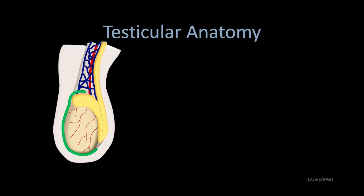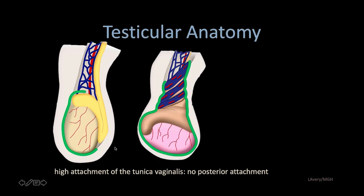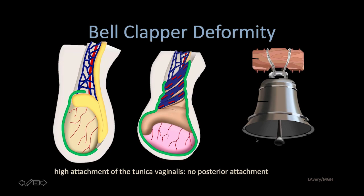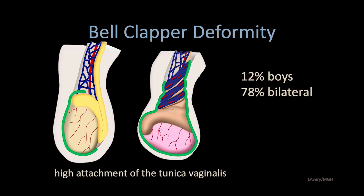Here's a normal testicle, descended into the scrotal sac and covered with the tunica vaginalis. The testicle is normally adhered posteriorly where it has fused with the posterior aspect of the scrotum. At times, the testicle can be completely invaginated in the tunica vaginalis without any posterior attachment — this is referred to as the bell clapper deformity. It allows the testicle more mobility within the scrotal sac and can result in torsion. This is present in up to 12% of men and is oftentimes bilateral.